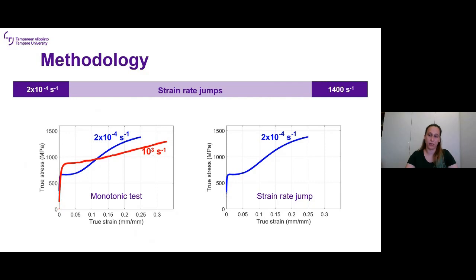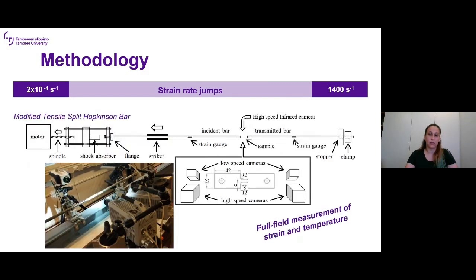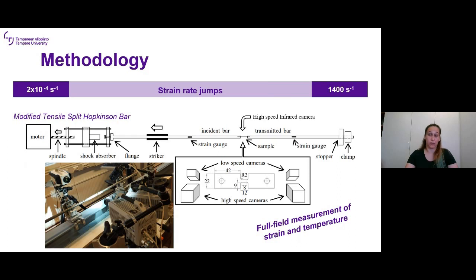To analyze the individual effect of strain rate, a strain rate jump test was used. In a monotonic test we keep a constant strain rate throughout, but in this test the sample initially deforms at a low strain rate, and after reaching a user-defined amount of deformation, the strain rate is suddenly increased by several orders of magnitude. Some modifications were required in the tensile split Hopkinson bar, and two different imaging systems were needed to analyze the strain at both the low and high rate portions. Some tests also included an infrared camera to measure full-field temperature during the high-rate portion.